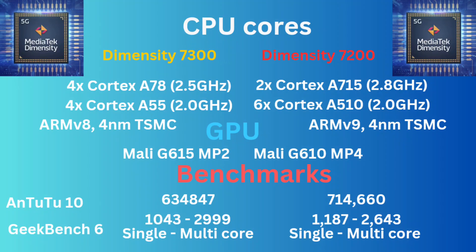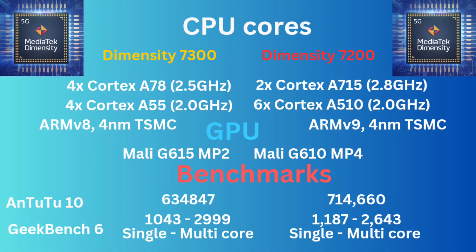Let's talk about the GPUs. The 7300 uses a Mali G615 MP2, while the 7200 uses a Mali G610 MP4. The G615 is slightly better than the G610 when it comes to graphics, but GPU cores are important. More cores equal better performance. You could have a better GPU, but if you only put two cores on it, and the slightly less powerful one has four or five cores, it's going to outperform the supposedly better one. And I think that's what's happening in this case.